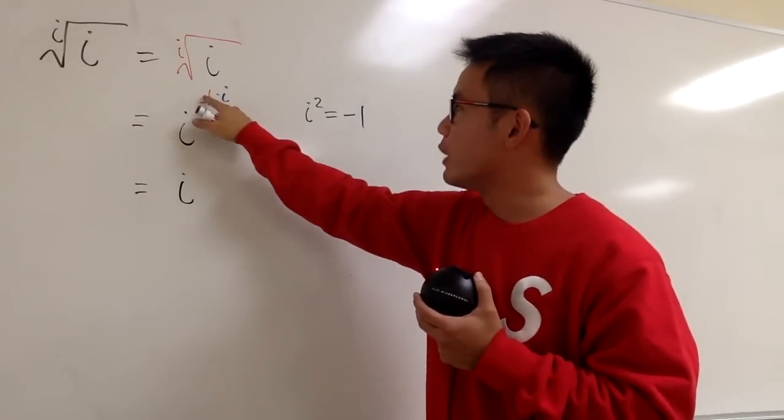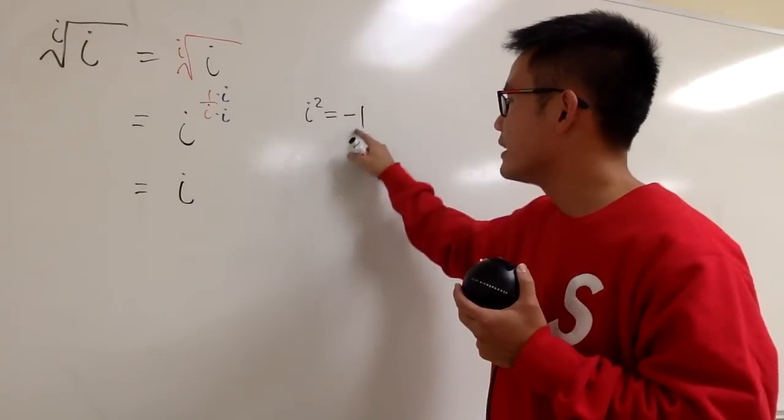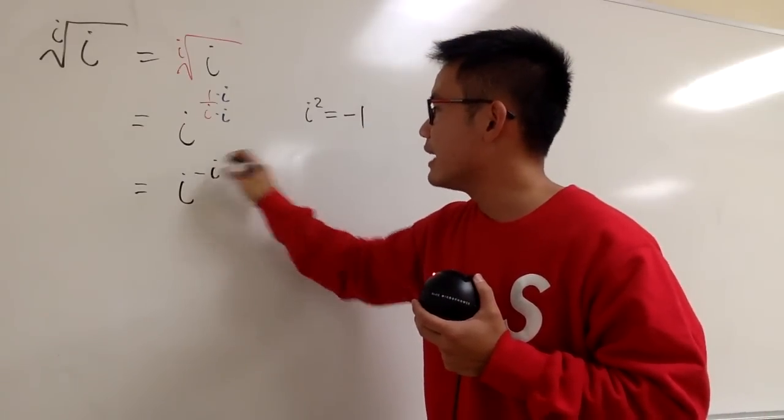On the top, we have 1 times i, which is i, i divided by negative 1, which is negative i, isn't it?